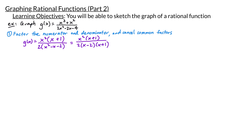So the quadratic factors as x minus 2 times x plus 1. We notice there's a common factor of x plus 1 in both numerator and denominator, so we cancel those out. Our function essentially behaves like x squared divided by 2 times x minus 2.